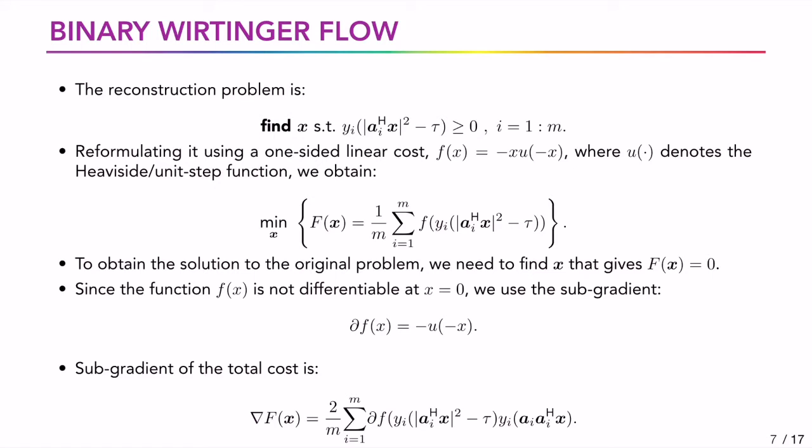Thus we obtain a cost function given by f of x. Now we can find the solution to the original problem by finding a signal x which gives a minimum value of 0 to the reformulated problem. If we observe the ramp function we can see that it is differentiable everywhere except at 0. Thus we use a subgradient defined by the flipped and inverted step function. The measurement matrix and the underlying signal could be complex. In order to account for this we employ Wirtinger gradients.